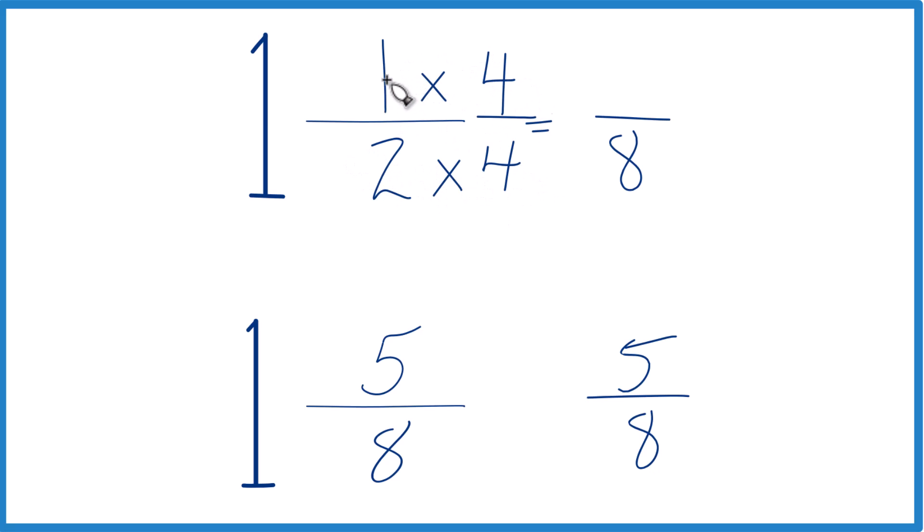But now we have 1 times 4 is 4. 4 eighths, that's the same thing as 1 half. They're equivalent fractions. But we can make our comparison here.